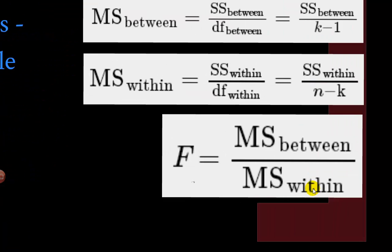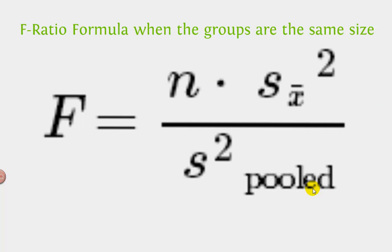If the groups are the same size, there's a simpler way to do it. We take the standard deviation of the means, multiply by n, and divide that by the variance pooled, which is just the average of the variances that we've been given. And that gives us our F value.